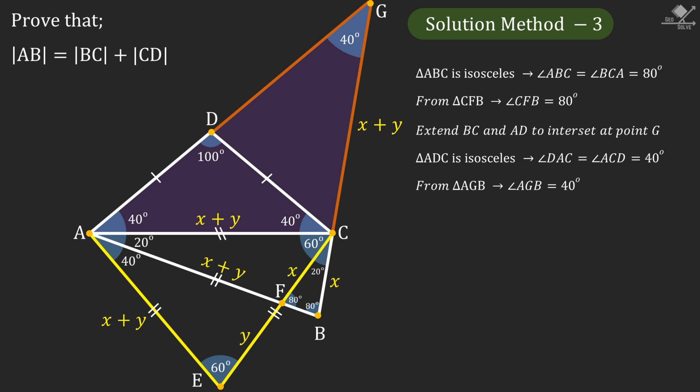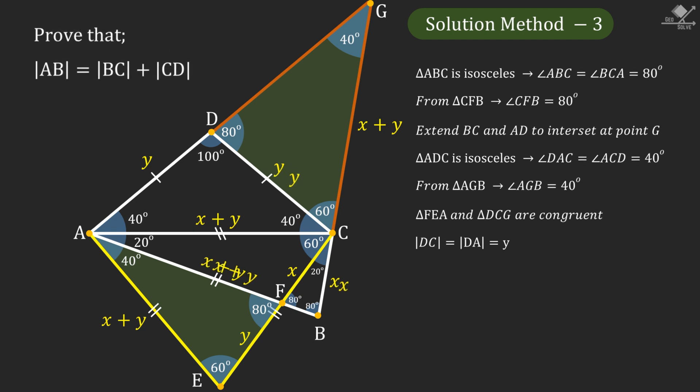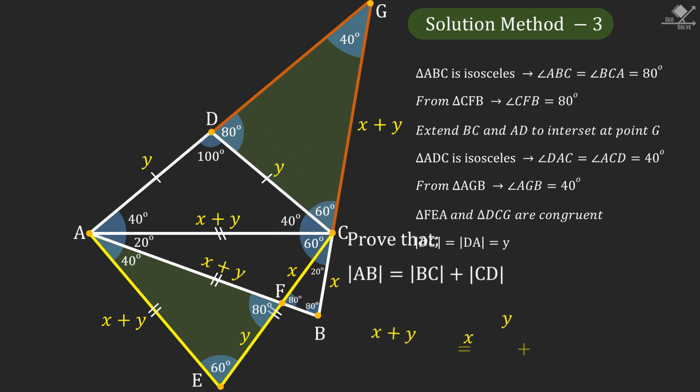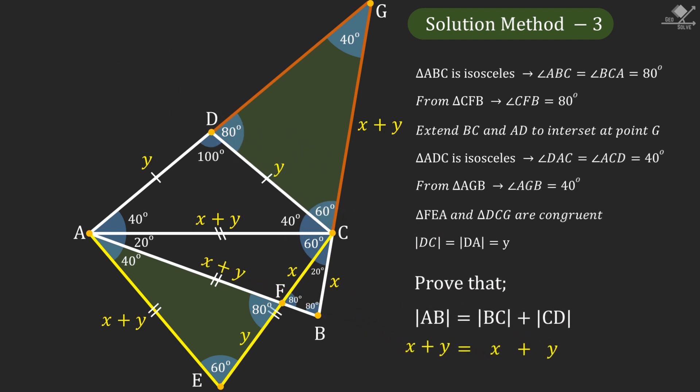Now focusing on these two shaded triangles, we can see that they are congruent. From here line segment DC will be y units, and that will prove that AB is equal to BC plus CD.